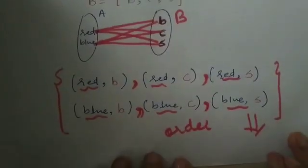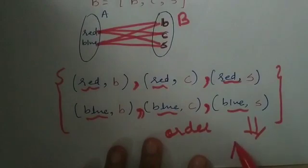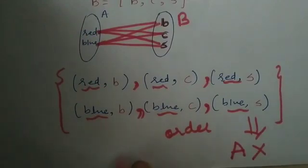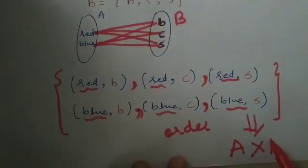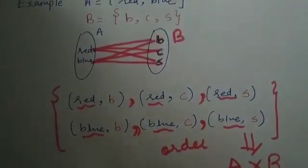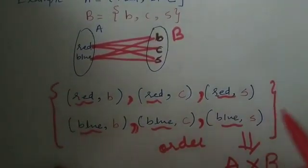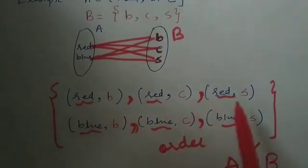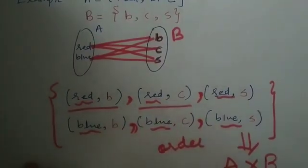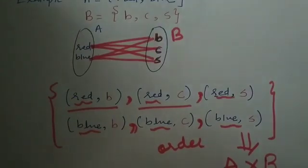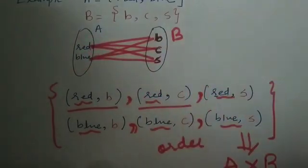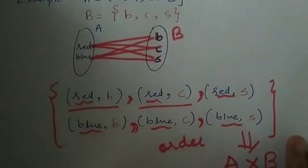Once you have done this, you have formed a set of all possible distinct ordered pairs from sets A and B — this is nothing but your Cartesian product. The notation for Cartesian product is: first set A, then the cross (product) sign, followed by second set B, written as A × B. You have formed a set which contains six distinct ordered pairs of elements coming from sets A and B.